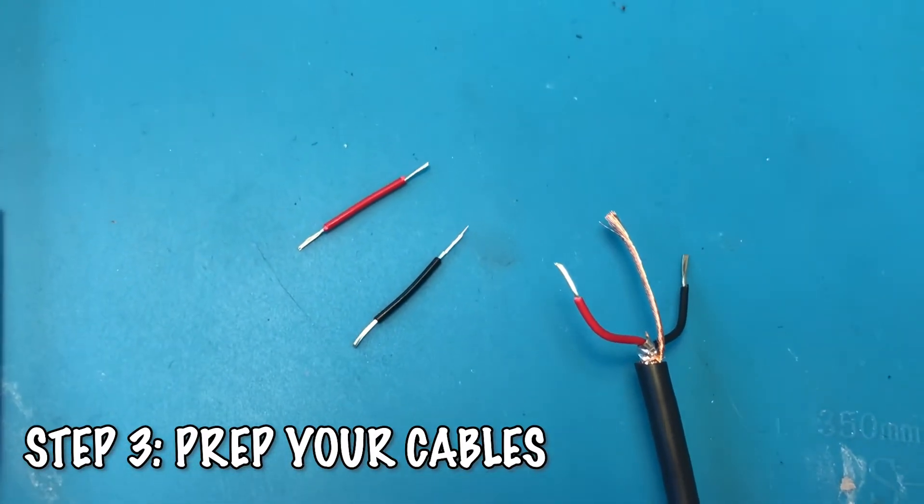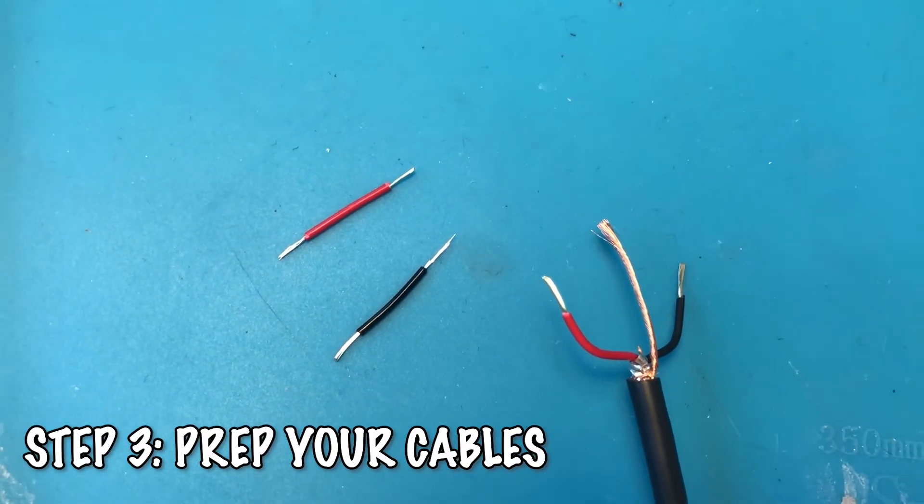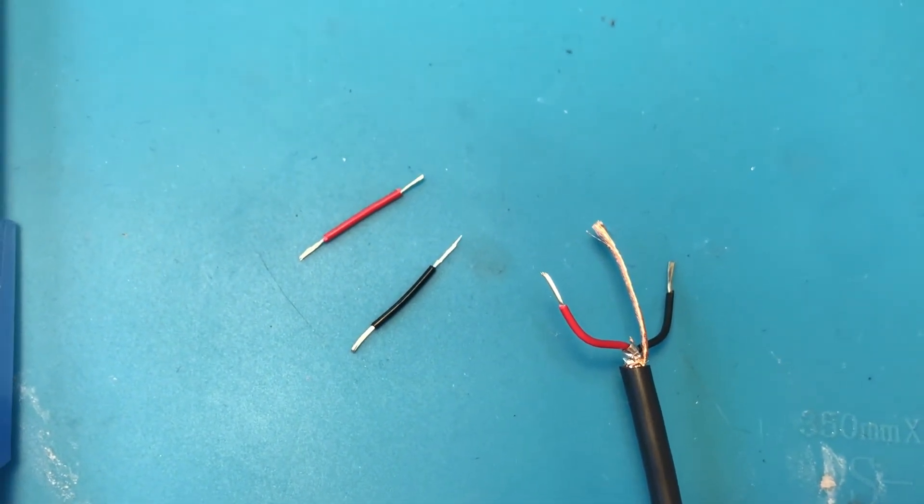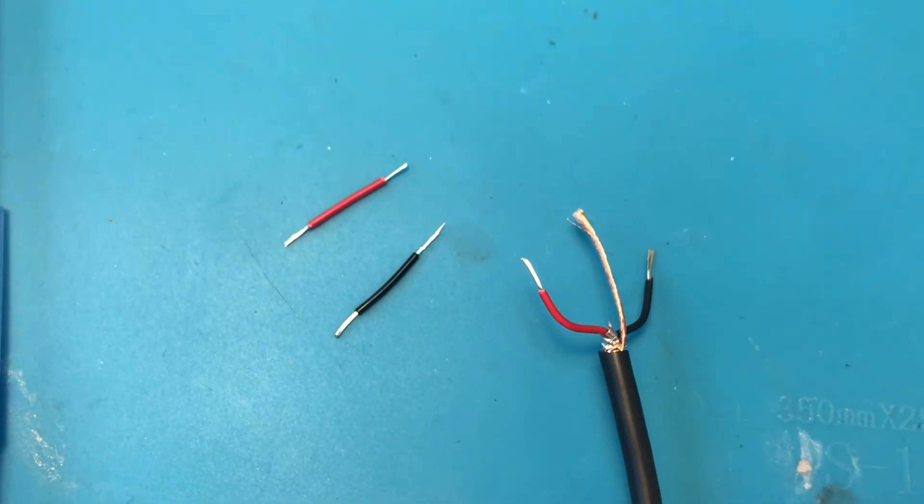Prep your connections by stripping about 3 sixteenths of an inch off the ends. If you're creating jumper wires, cut them from the original lengths of wire or from some scrap wire.